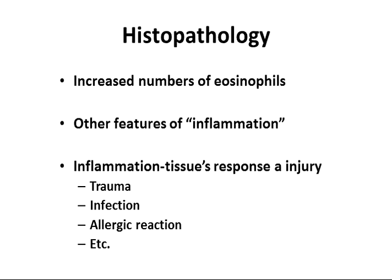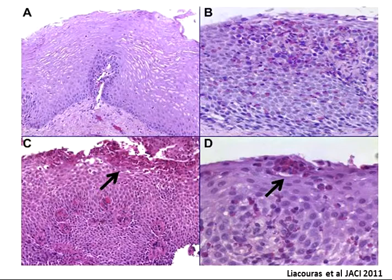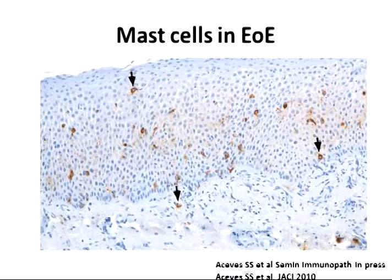As Dr. Newberry said, there are increased numbers of eosinophils and other features of inflammation. Inflammation is not always a bad thing — it's something the body does in response to trauma, infection, allergic reaction, or something else. It's the body's process of trying to heal, and when it gets out of control, we have a diseased state. In the normal esophagus you see a smooth surface with uniform flattened cells, but in panels B, C, and D you can see increased numbers of pinkish eosinophils present throughout the tissue, sometimes forming little clusters, which are features we see with eosinophilic esophagitis.